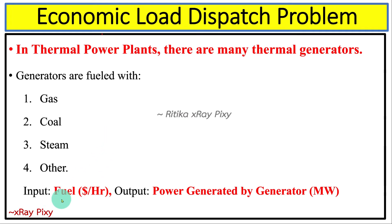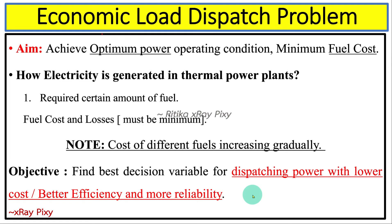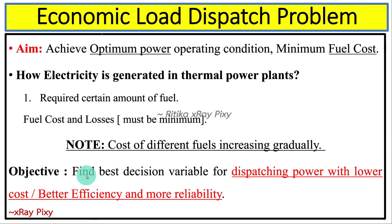In this problem, the input is fuel and the output is power generated by the generator. The fuel cost is measured in dollars per hour and the power generated is in megawatts. Our aim is to achieve optimum power and minimum fuel cost. Since the cost of different fuels is increasing, we need to find the best decision variable for the dispatching problem — dispatching power with lower cost and more reliability.